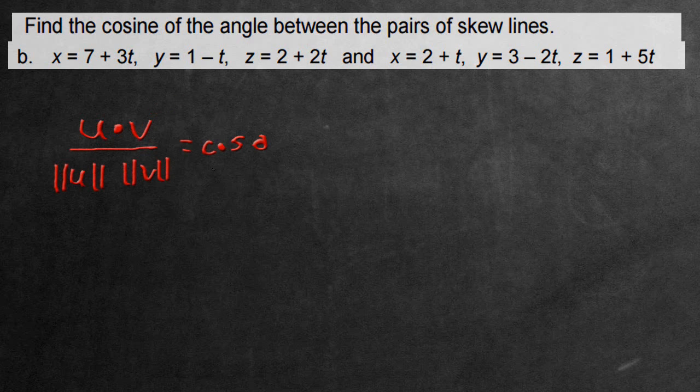So to get started using this formula, first we need to actually find some vectors because all we have is lines here. Now the specific line form for their equation, they wrote it out in what's called the parametric form for the equation of a line. All you need to know is that if you take the specific coefficients of whatever is attached to the t value that you see here, that's going to give you the individual components of a vector that's parallel to the line.